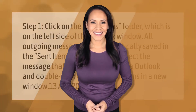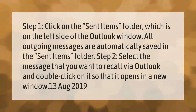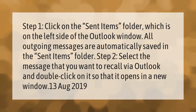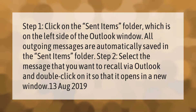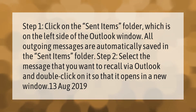Step one: click on the Sent Items folder, which is on the left side of the Outlook window. All outgoing messages are automatically saved in the Sent Items folder. Step two: select the message that you want to recall via Outlook and double-click on it so that it opens in a new window.